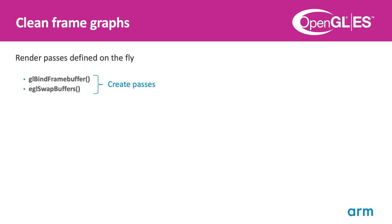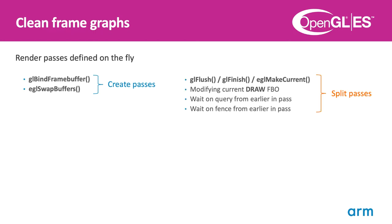OpenGL ES follows much of the same guidance and principle, but as the API has no explicit concept of render passes, the implementation differs. Render passes in OpenGL ES are entirely built on the fly by the graphics driver, based on the API calls made by the application. In general, calling glBindFramebuffer to change the draw target, or calling eglSwapBuffers to end a frame, will convert the currently queued commands into a render pass and start a new one. Other API calls can also cause a similar flush behavior — most obviously, changing the attachment bindings of the current draw target, calling glFlush, glFinish, or eglMakeCurrent, can all cause the current queued commands to get converted into a render pass.